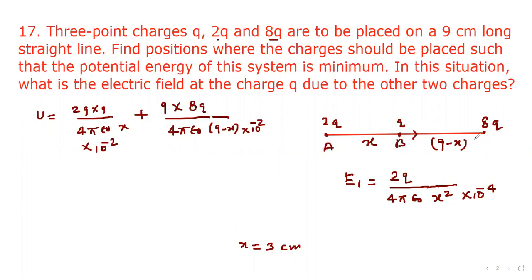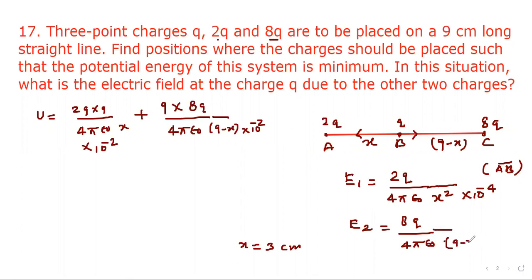Suppose the points are A, B, C. The electric field E2 due to the 8q charge at q is directed along CA — opposite to E1 — and E2 equals 8q divided by 4 pi epsilon naught times (9 minus x) squared times 10 to the power minus 4.